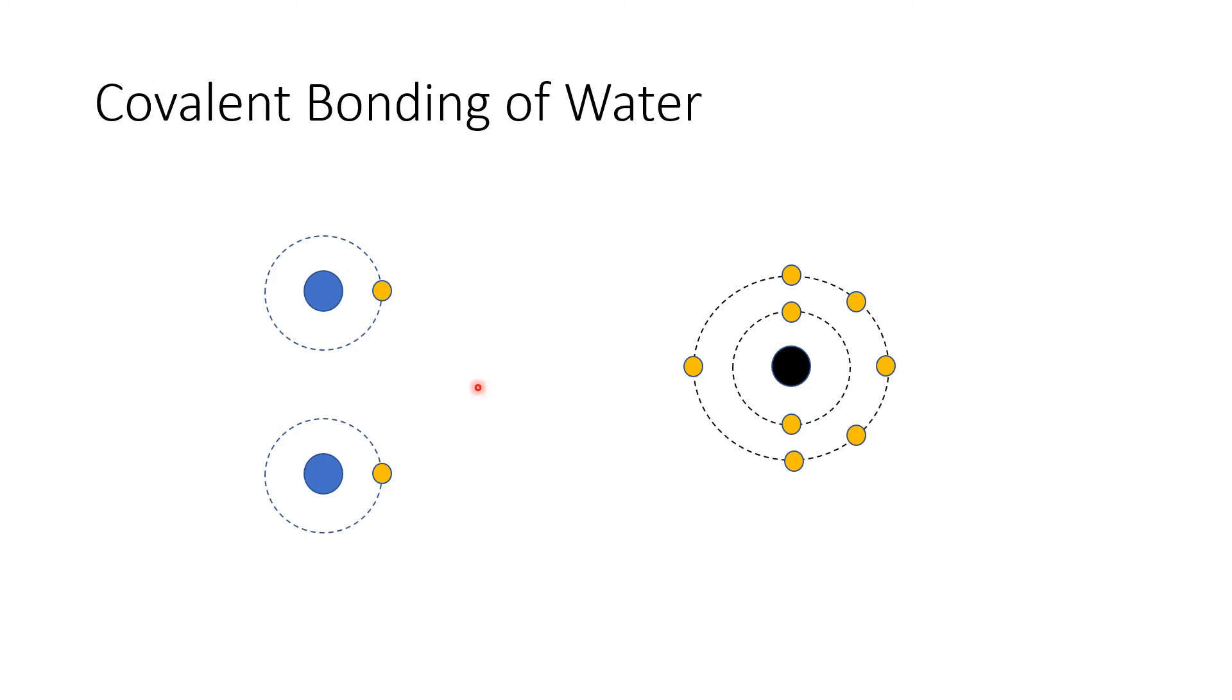Hydrogen will share its lone electron with the oxygen. As the hydrogen shares its lone electron with the oxygen, it adds to the valence electrons of oxygen, so it becomes now seven valence electrons. Aside from that, oxygen also shares one of its valence electrons with hydrogen to complete the two electrons at the energy level of hydrogen.